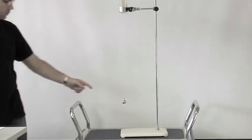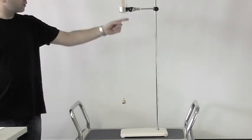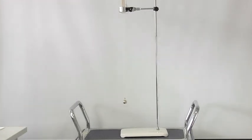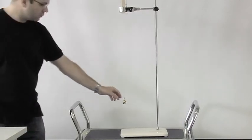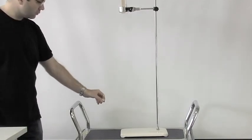A simple pendulum consists of a small object of mass M, called the bob of the pendulum, suspended from one end of a very light string of length L that is fixed at the other end. It is assumed that the string is not stretching as the bob swings backwards and forwards.